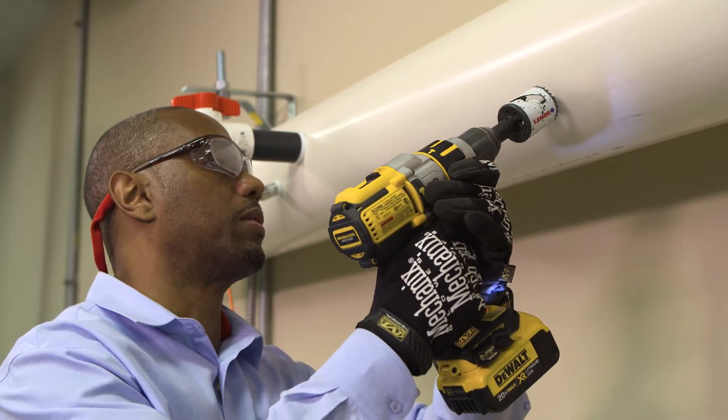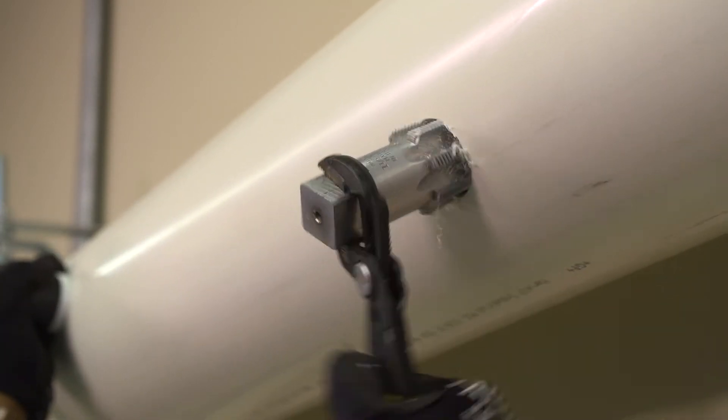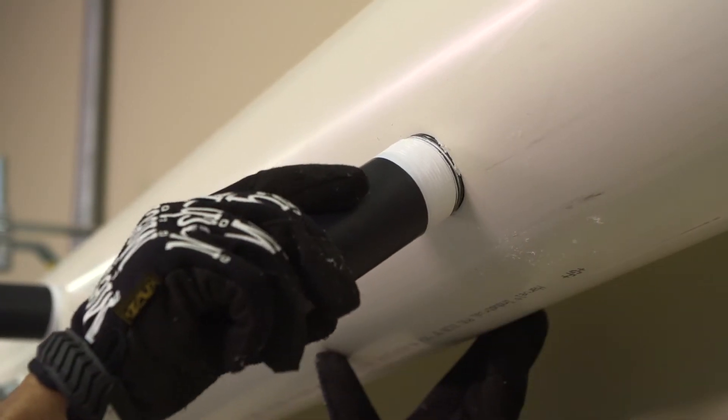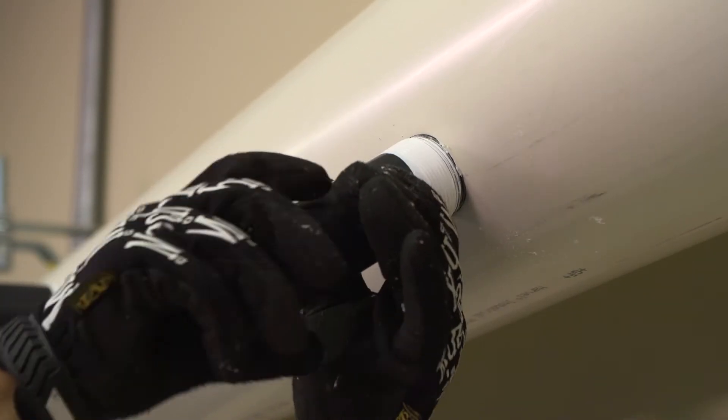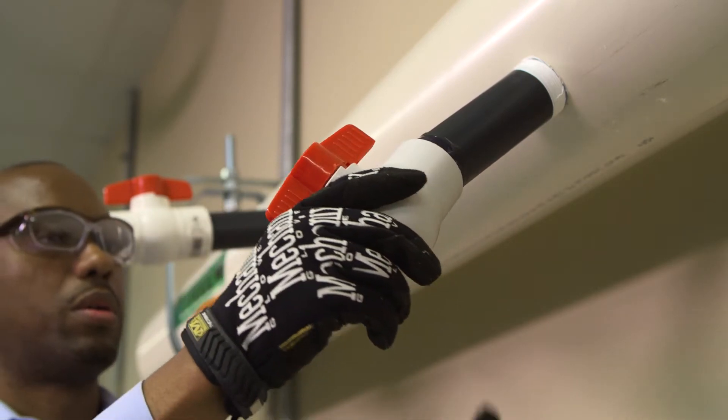Drill and tap a second 1.5-inch NPT hole downstream of the first. This hole accommodates the discharge side of the pump. If automated controllers are used in the system, the drilled and tapped hole must be placed downstream of the ORP and pH probes. This is to avoid problems that may occur with the controller operation. Thread the second nipple into the tapped hole or saddle clamp. Take another 1.5-inch ball valve and glue it onto the second nipple.